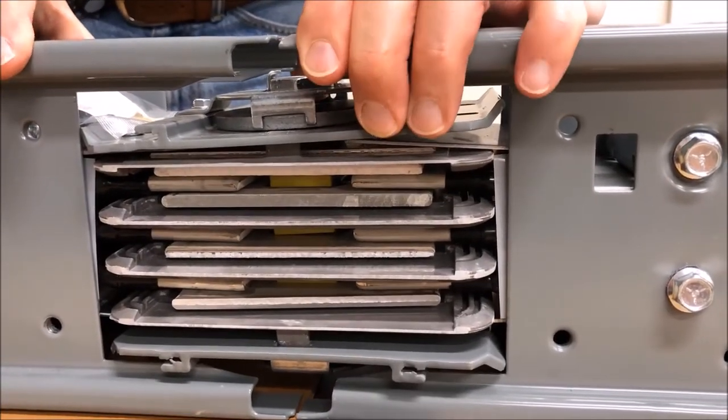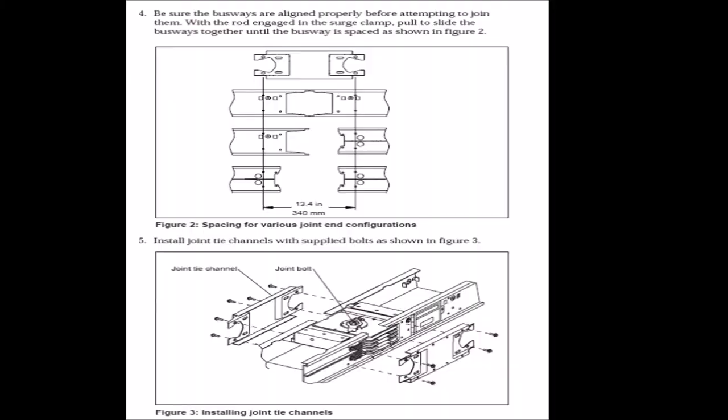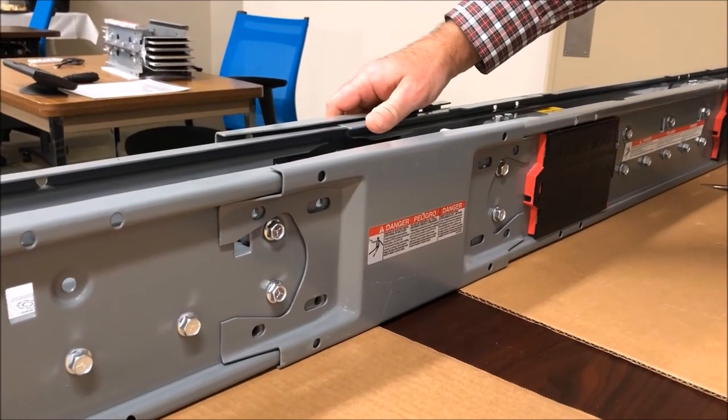And that's okay because that's going to be taken care of once we install the tie channels. I do want to point out in the instructions that the dimensions shown here are actually the dimension between the two mounting holes on the tie channels. Now we're ready to install the tie channels.